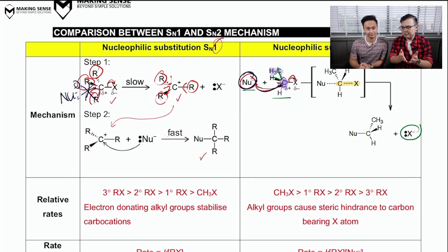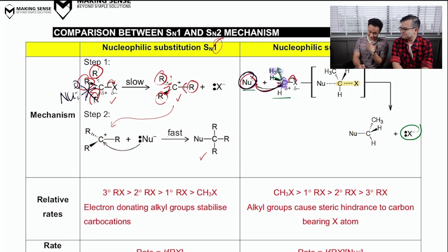Let's see what happens if you have a secondary halogenoalkane. Mr. Tim, what will happen? Damn, well, if it's a secondary halogenoalkane, then you really have to think because it could be SN1, it could be SN2, or it could be a combination of both. We're not so sure.